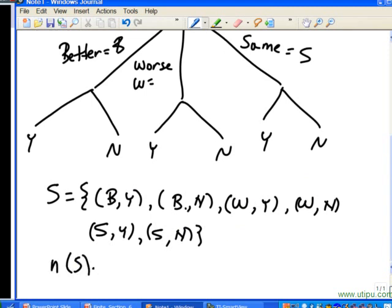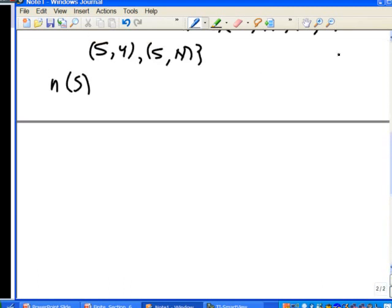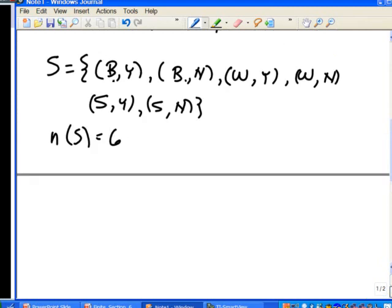So, the size of the sample space, then. I'll put n(S) for our cardinality. And that's going to be six. That's the size just by counting out the outcomes in the set. But notice here, we can also use the multiplication principle. There are three ways to answer the first question. There's two ways to answer the second question with a product of six. So, that's how we write the sample space for an experiment.